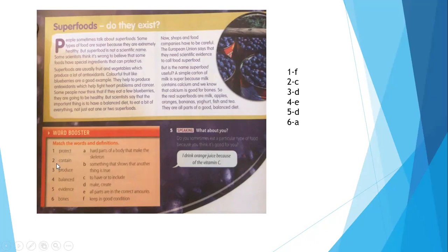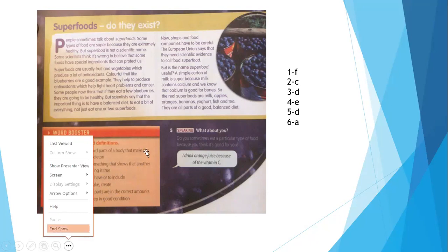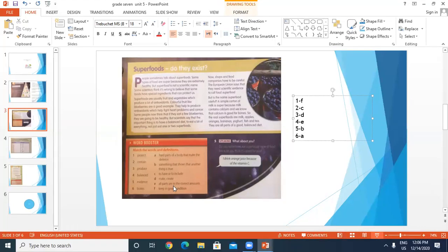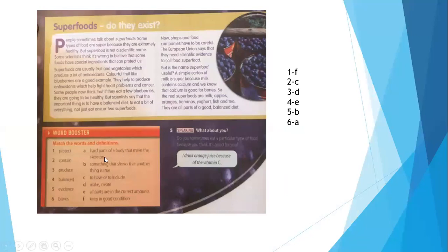Now we have vocabulary. Contains means to have or to include. Produce, make or create. Balanced, all in the correct amount. Evidence, something that shows another thing is true. Bones, a hard part of body that forms the skeleton. So one with F, two with C, three with B, four with E, five with D, and six with A.